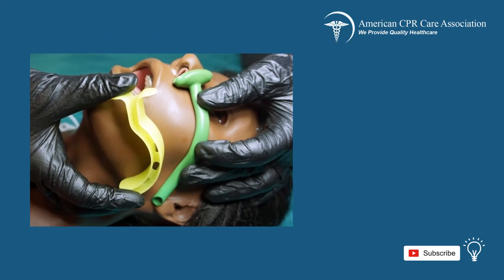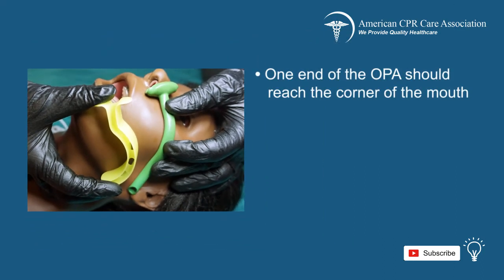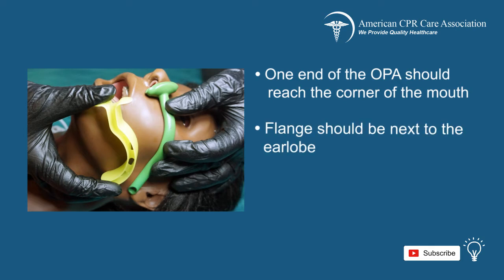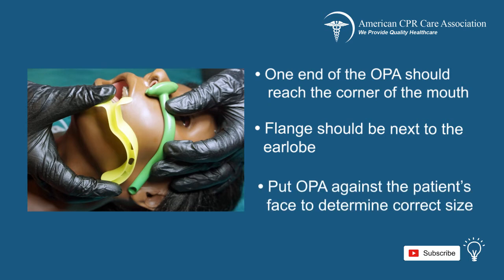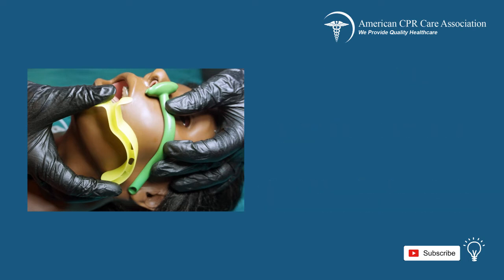When deciding which size OPA to use, keep in mind that the tip of the OPA should reach the corner of the patient's mouth, while the flange reaches the angle of the mandible next to the earlobe. Put the OPA against the patient's face to determine the proper size. Make sure to choose the appropriate size, as a device that is too big may obstruct the larynx or cause trauma, and one that is too small can push the tongue back and block the airway.